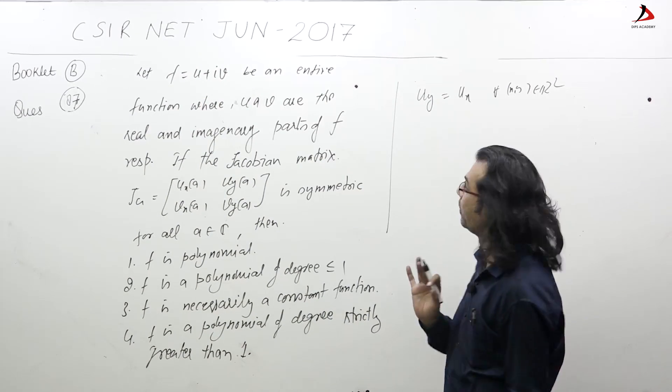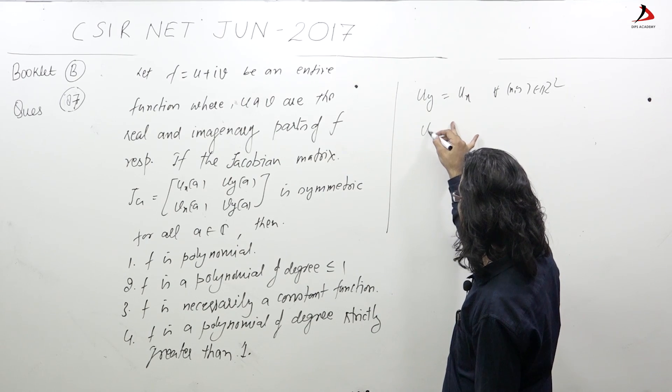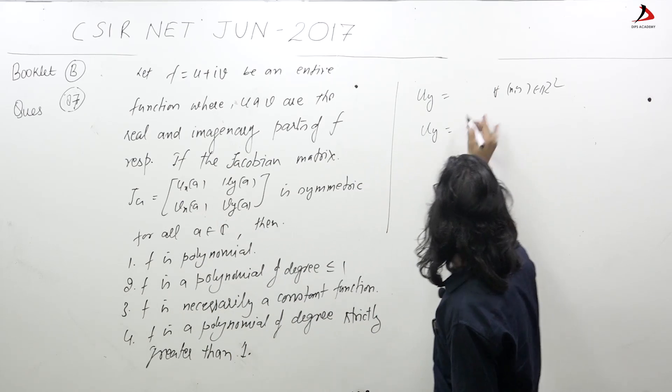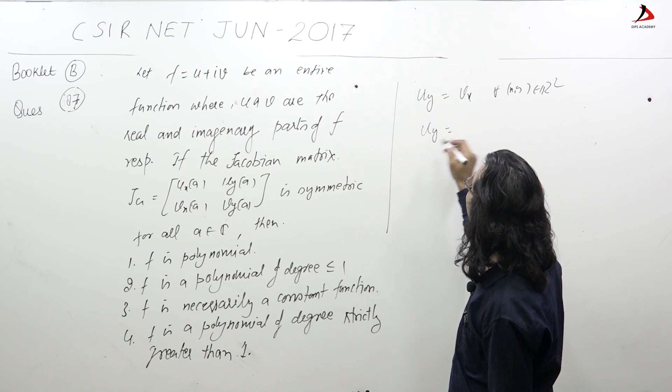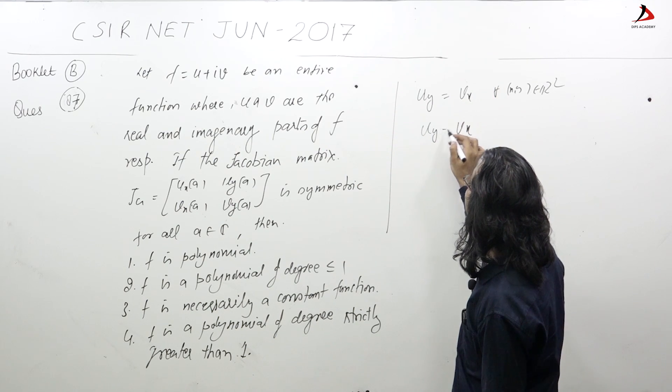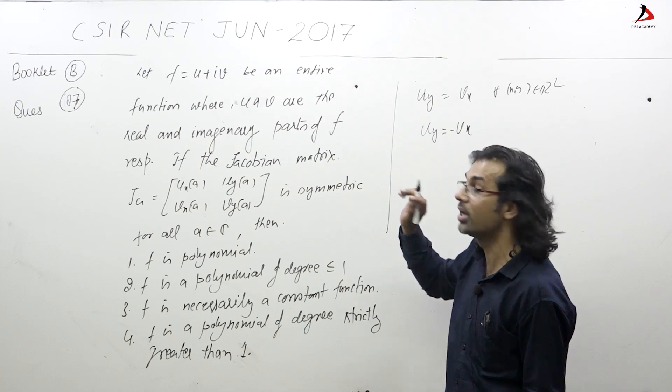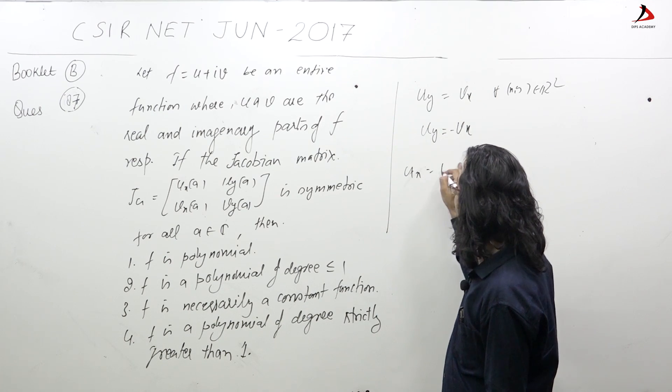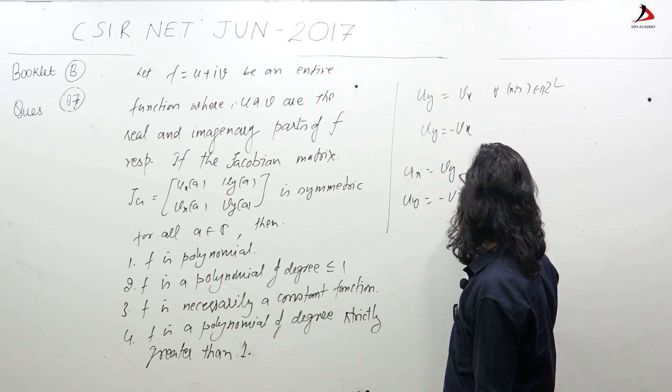This is v_x, but u_y equals v_x with negative sign. We know in CR equations what are the CR equations: u_x equals v_y and u_y equals minus v_x. So v_y must be equal to minus v_x. It is given u_y equals v_x.